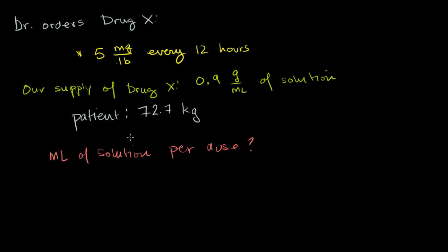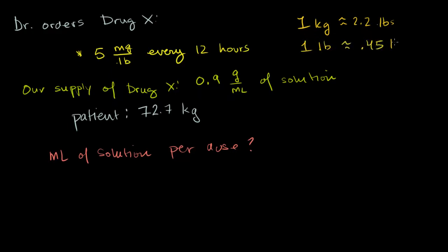The first interesting thing — and this is just something you might need to know, or have written down, or have a calculator for — is how to convert kilograms to pounds. It's good to know when converting between the metric and English systems. One kilogram is approximately equal to 2.2 pounds — not exactly, but that's a pretty good approximation. And 1 pound is approximately equal to 0.45 kilograms. This is the only outside conversion information we'll need to do this problem.